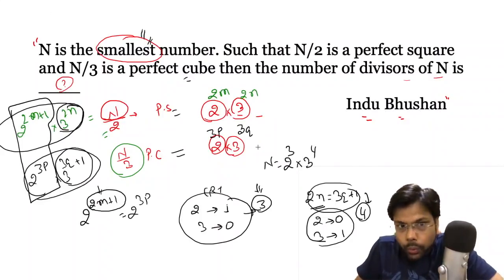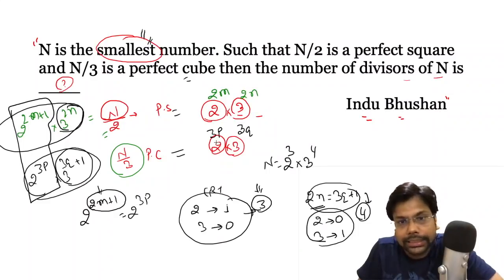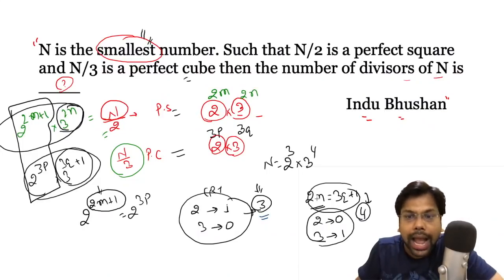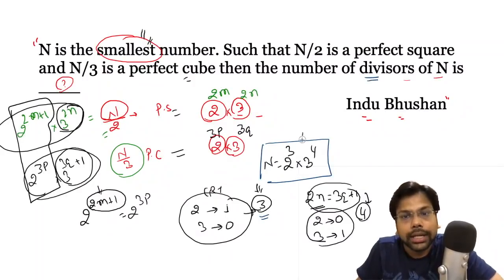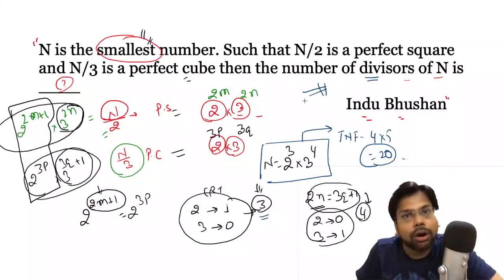So n is equal to 2^3 × 3^4. We can verify: n/2 = 2^2 × 3^4, which is a perfect square ✓; n/3 = 2^3 × 3^3, which is a perfect cube ✓. The number of divisors is found by increasing each power by 1 and multiplying: (3+1) × (4+1) = 4 × 5 = 20. So the answer to this question is 20.